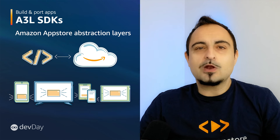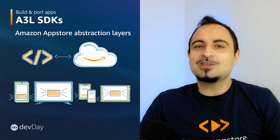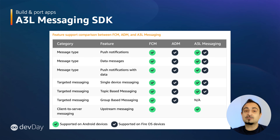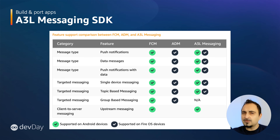Let's walk through the latest updates for the A3L Messaging SDK and the new A3L Authentication SDK. To launch an Android app, you can use Firebase Cloud Messaging to send push notifications with Google Play services, and Amazon Device Messaging for Fire OS. The A3L Messaging SDK abstracts dependencies on Firebase Cloud Messaging for Android and Amazon Device Messaging for Fire OS, enabling you to build one consistent customer experience across Android and Amazon devices.